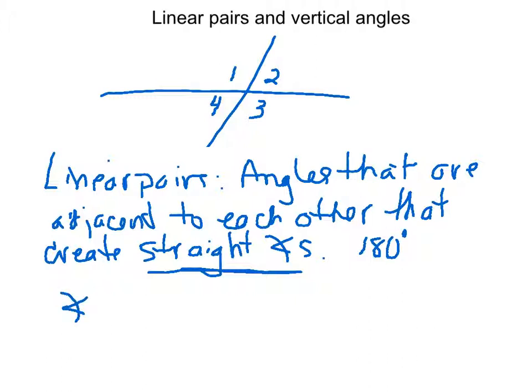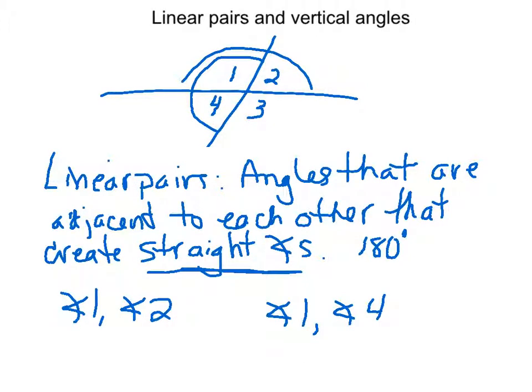So if we look at Angle 1, it is a linear pair with Angle 2. They create a straight angle together. Some of you guys are like, wait a minute, Howard, Angle 1 could also be a linear pair with Angle 4. And you're absolutely right. Angle 1 and 4 also create a straight angle. Similarly, we could say that Angle 2 is a linear pair to Angle 3. So that's just something that you can keep in mind.